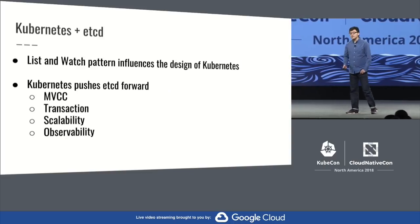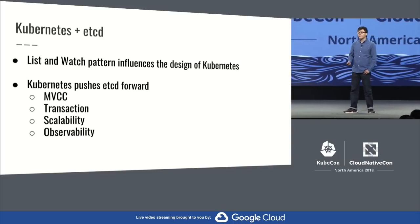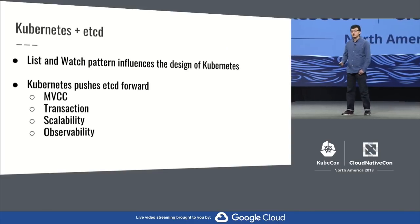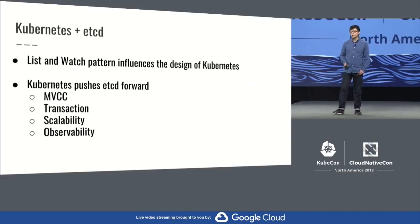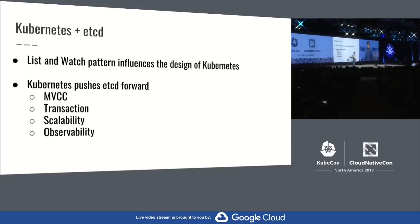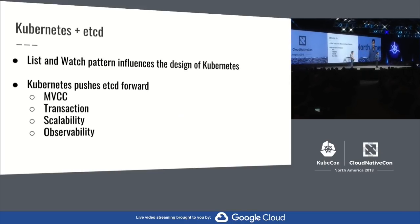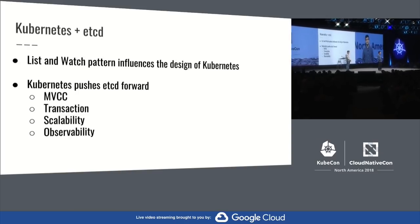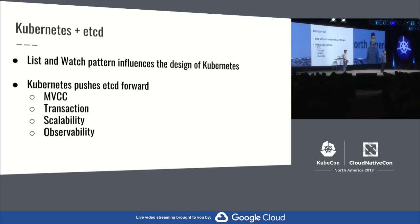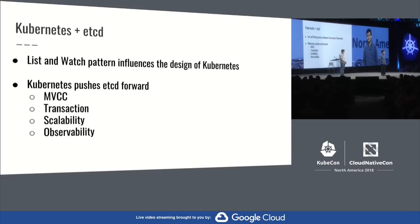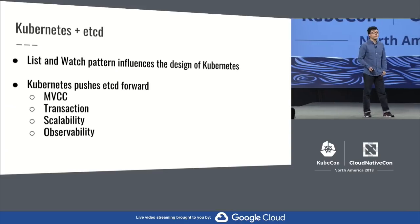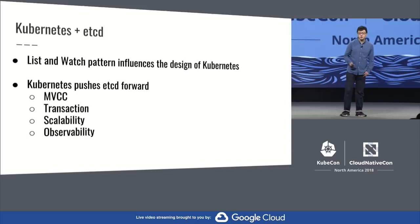Kubernetes is a major user of etcd, and we have been working very closely with the Kubernetes community. The two projects have benefited from each other. The list and watch feature from etcd influenced the design of Kubernetes. And the Kubernetes requirements for etcd, especially around scalability, observability, and reliability, pushed etcd development forward. A few etcd maintainers are also Kubernetes maintainers. So we'll continue to see a bright future of the collaboration between the two projects.